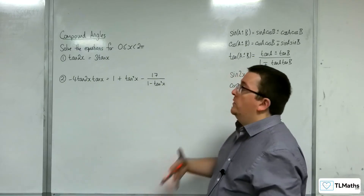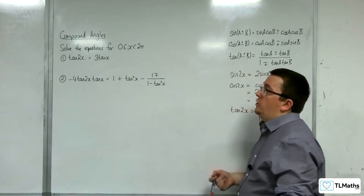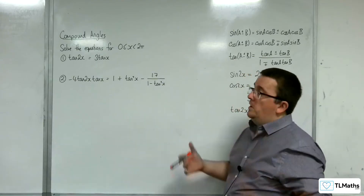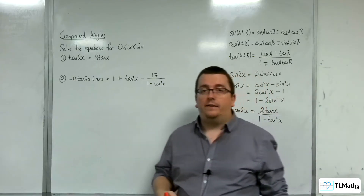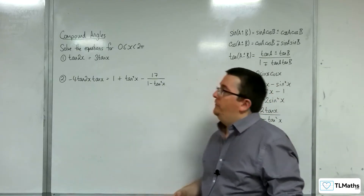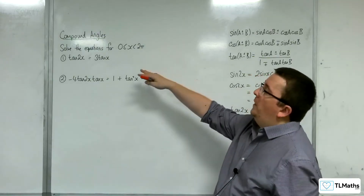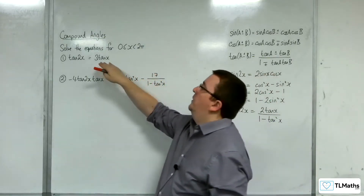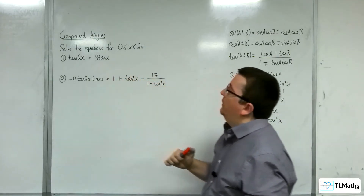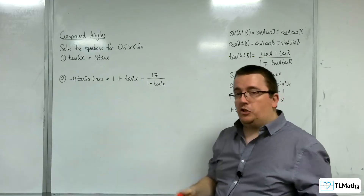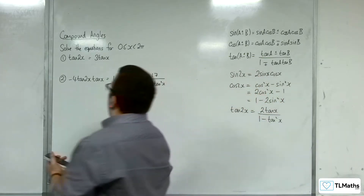In this video we're going to be going through a couple of questions that involve the double angle formula for tan, so tan of 2x. We've got this first one: tan of 2x is equal to 3 tan x, and we're solving between 0 and 2 pi.